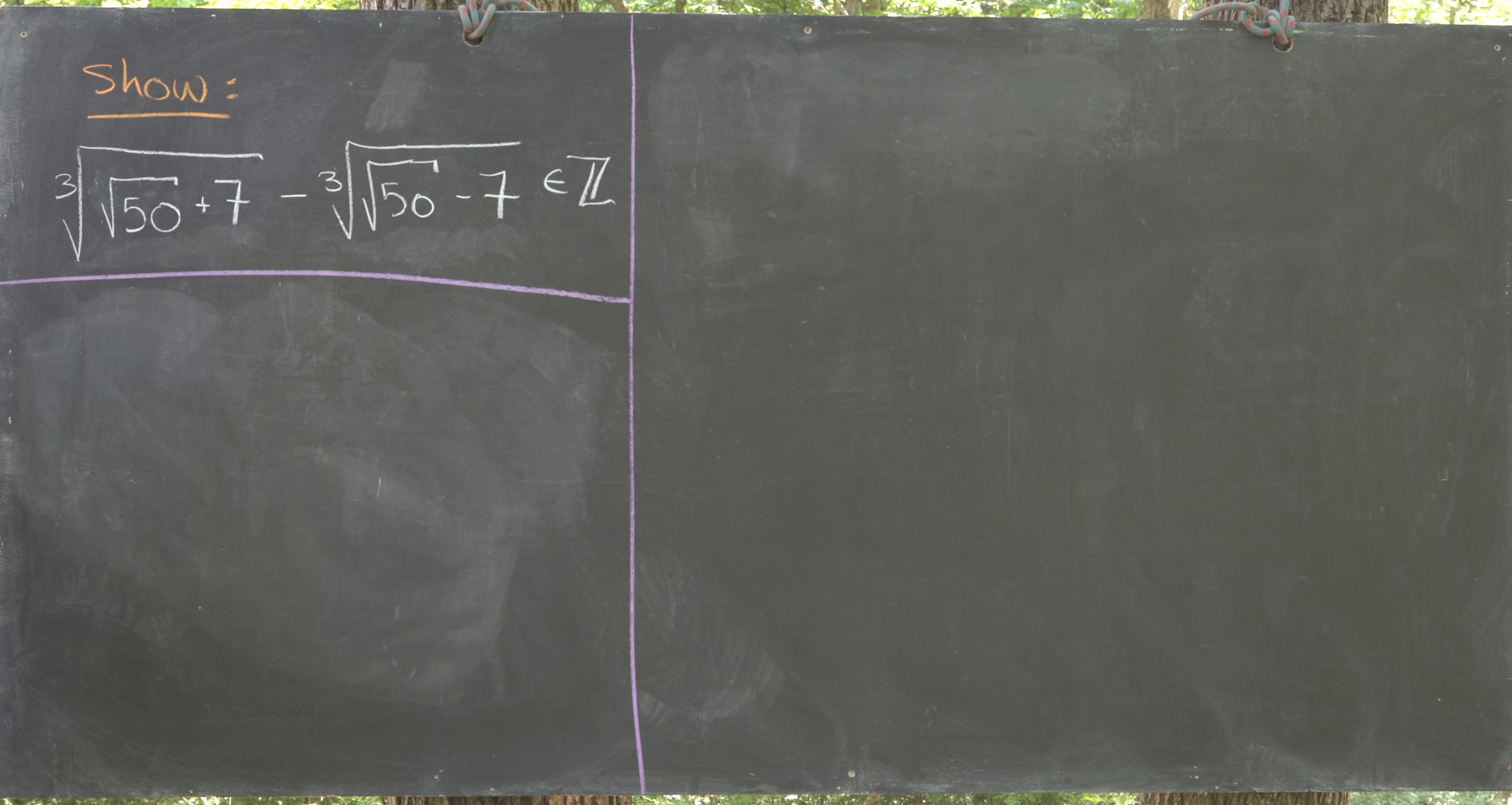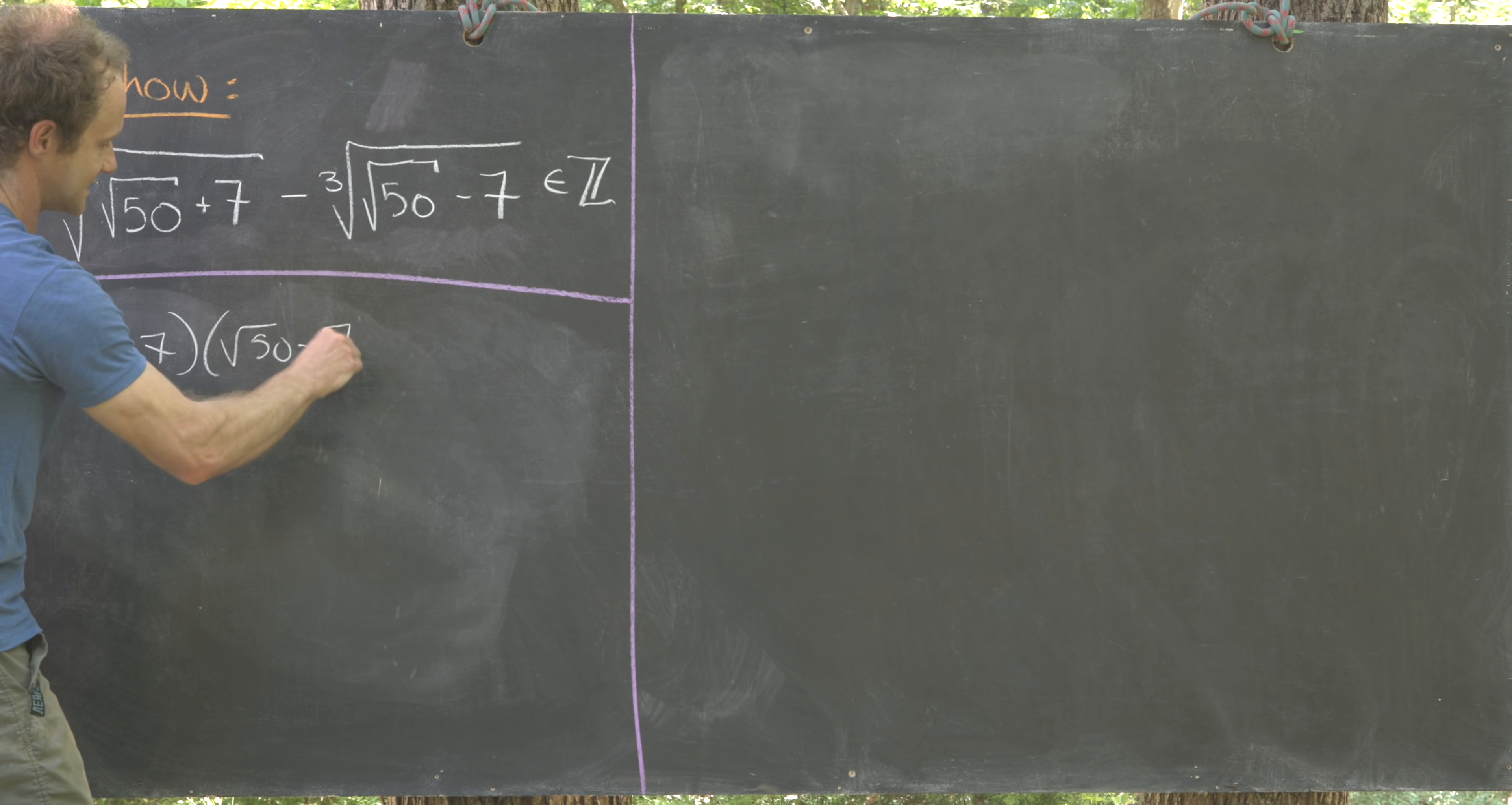First off, I want to notice that if I take the interior of these two cube roots and take their product, it becomes some nice number. So we have the square root of 50 plus 7 times the square root of 50 minus 7.